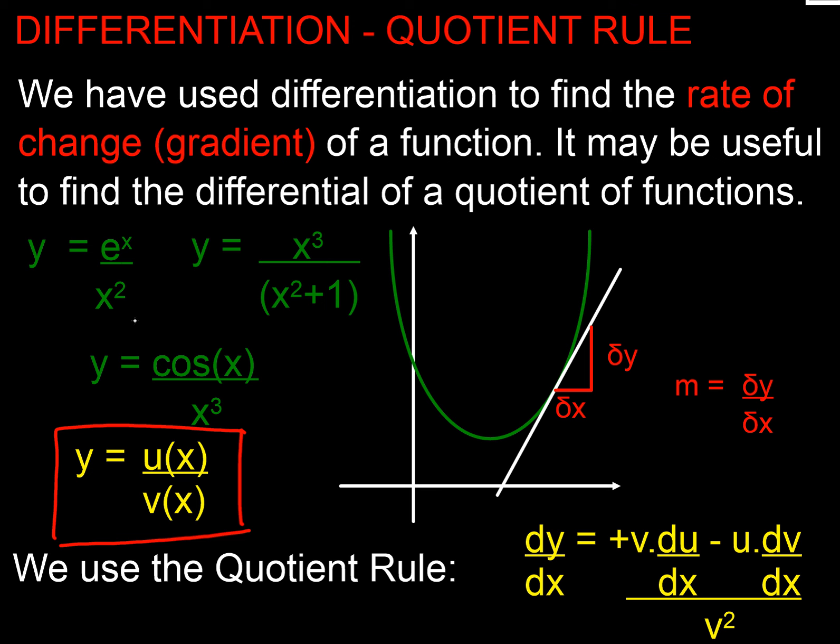Here's some examples above. If we had e^x divided by x², or x³ over x², or cos(x) over x³, we're going to use the quotient rule. You'll see some similarity with the product rule, but we've got v² on the bottom and a change of sign as well. It's important we get our u and v the right way around.